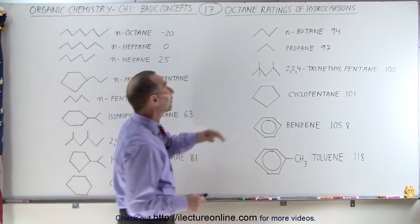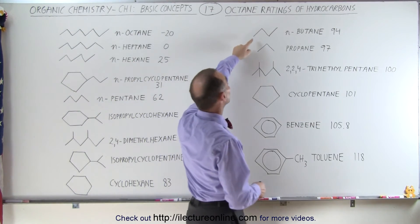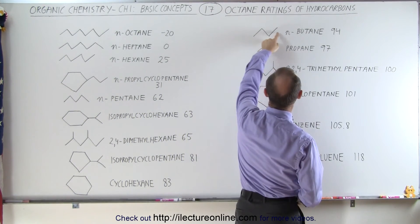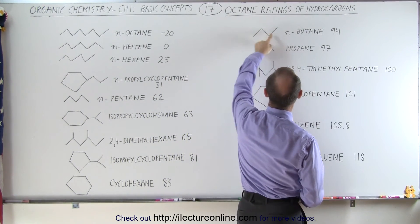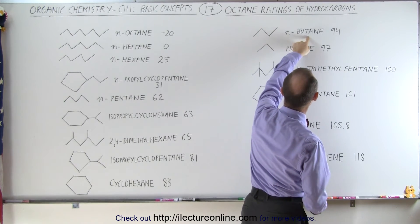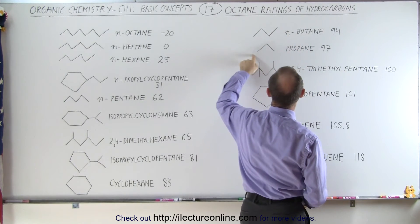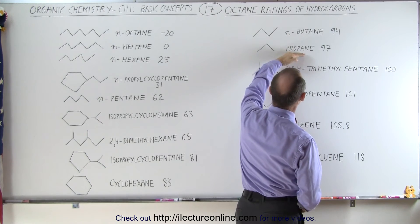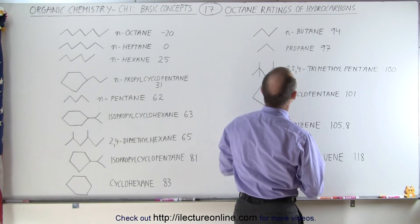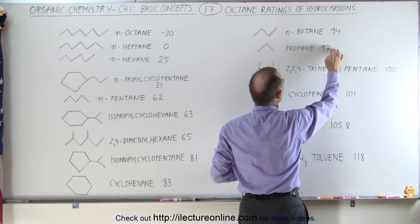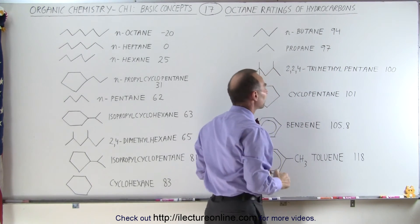The next are again very familiar molecules. Here we have one with four carbons — it's linear in structure — so N-butane, and here we have three carbons, and that we simply call propane. Notice the octane levels are 94 and 97.